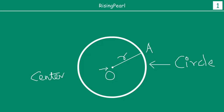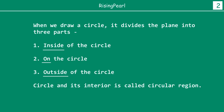Now, what is also important to understand is that whenever we draw a circle, the circle divides the plane into three parts. One is the part which is inside the circle. One is the part of the plane which is on the circle. And one is the part which is outside the circle. The circle and its interior is called the circular region.